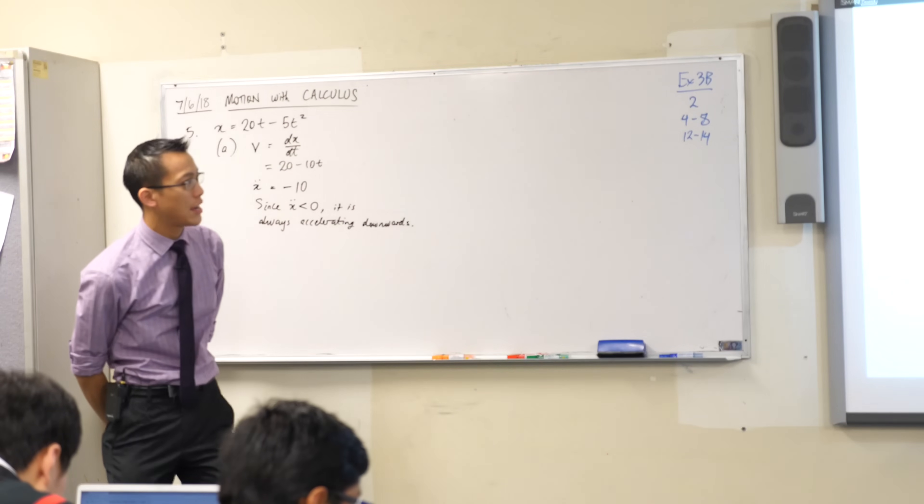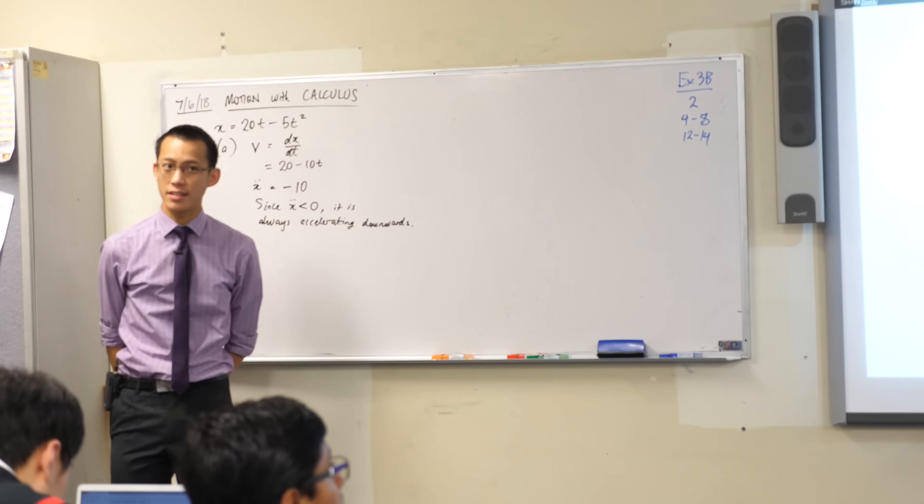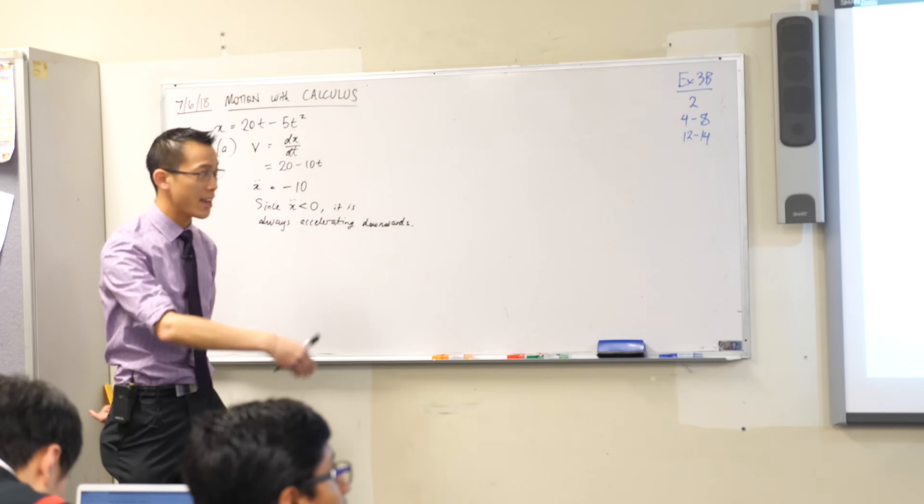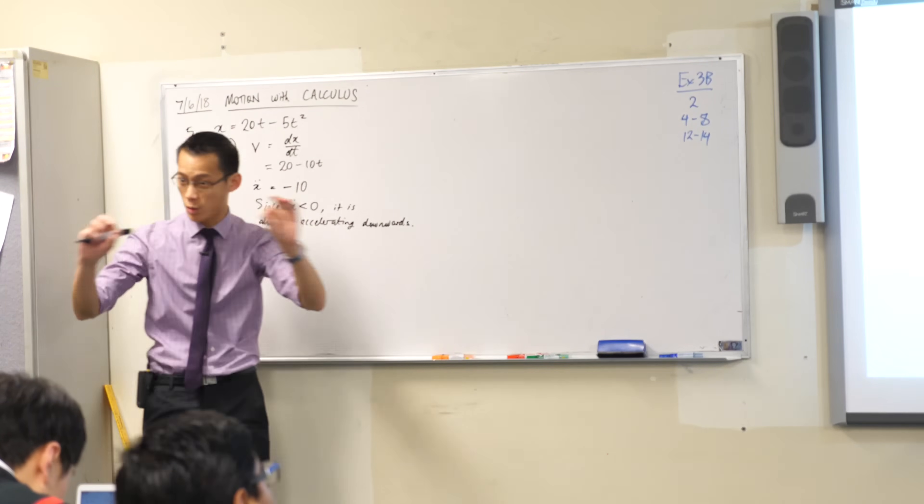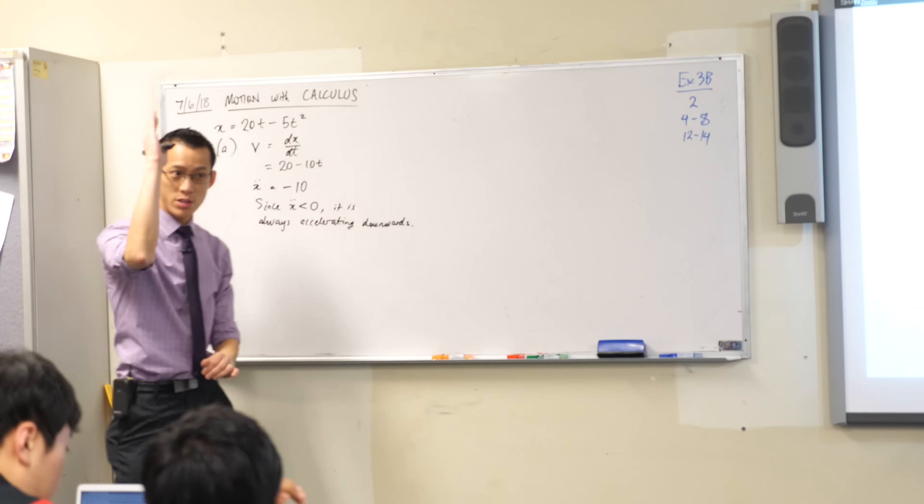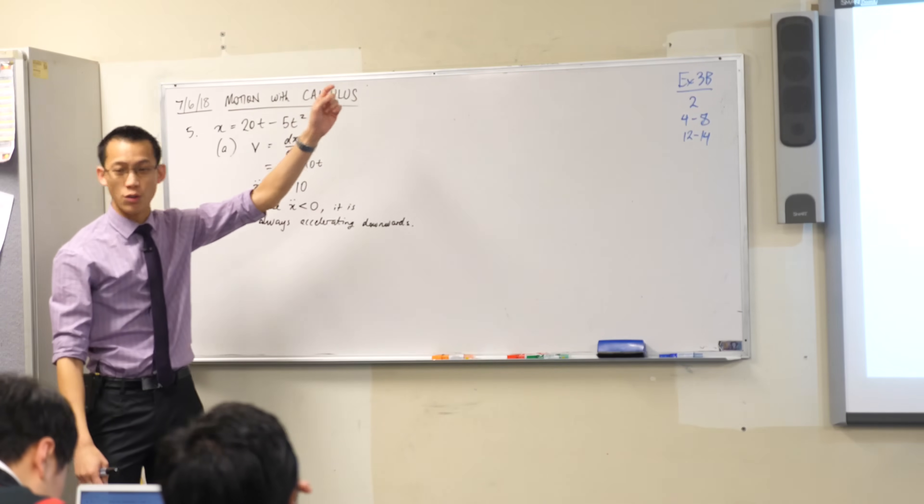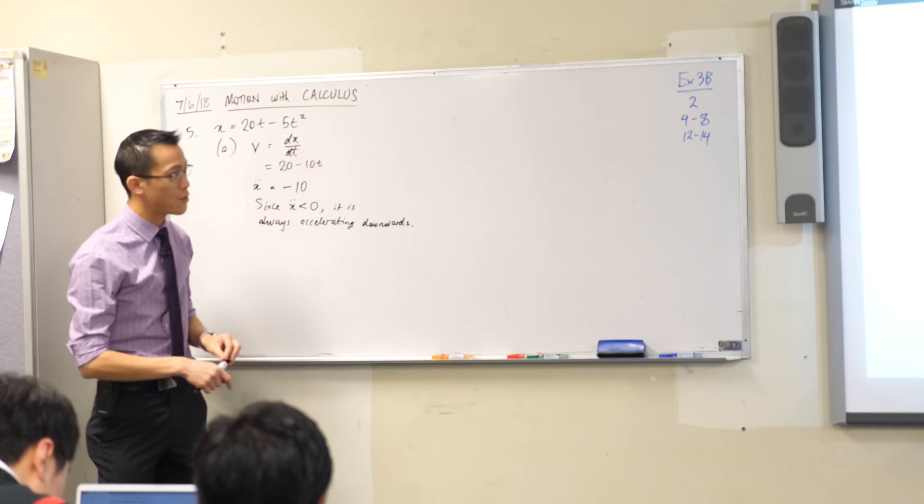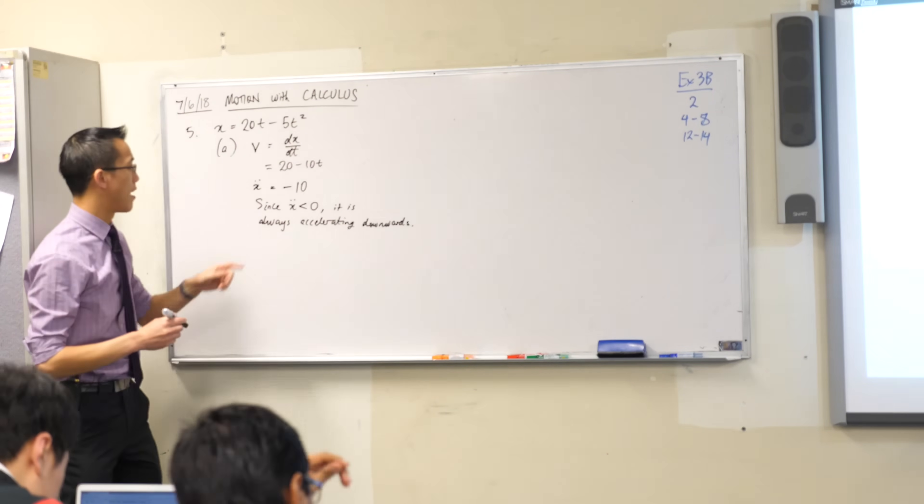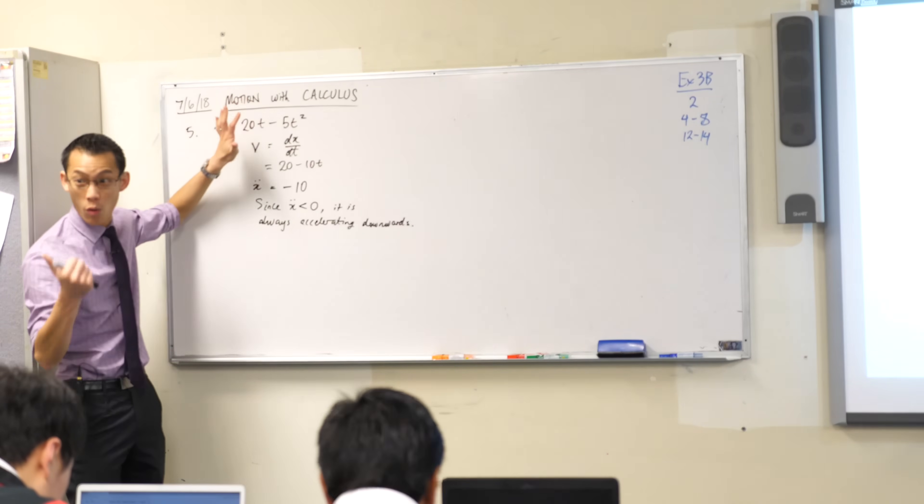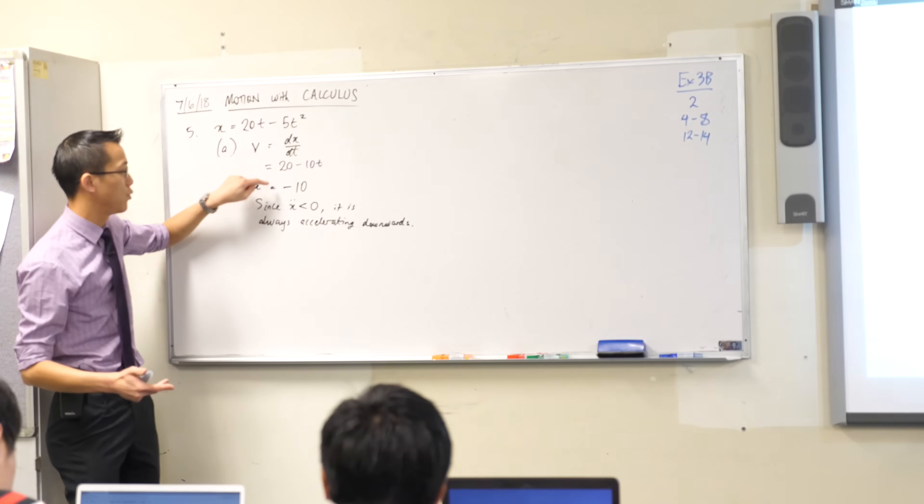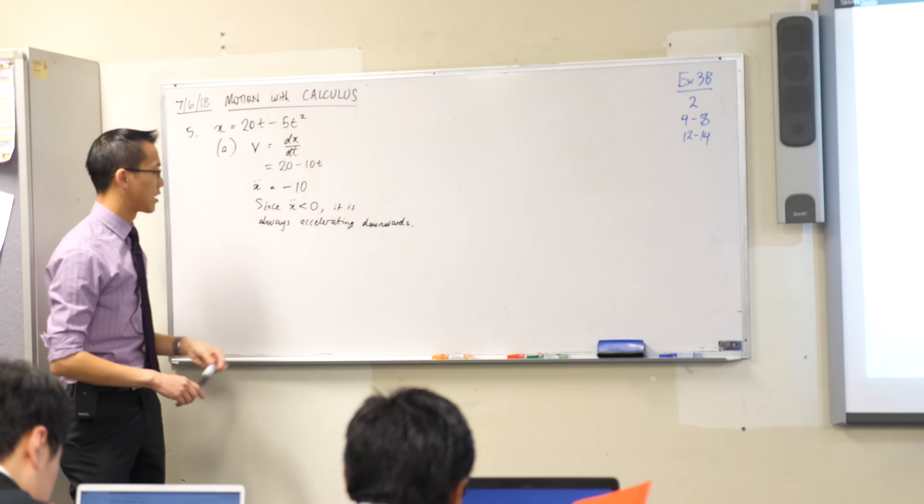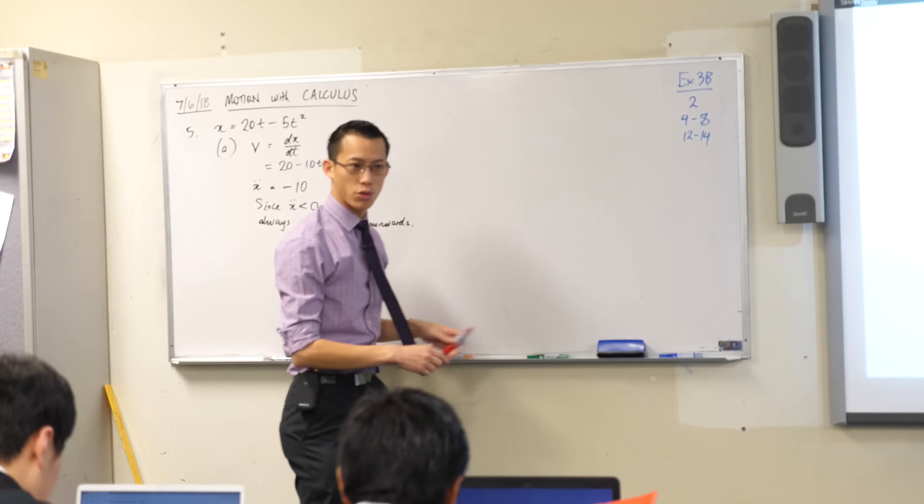Then sketch graphs of x, v, and x double dot against t. So when they say against t, they mean t is going to be your horizontal axis for the whole thing and we're going to use the vertical axis to have all three graphs of these at the same time. Can I give you a minute to draw up your axes? Think carefully about what kind of scale you're going to need to use so you can fit all three graphs. One, two, three, all in the same graph. I'll give you a second to put that together and then we'll compare.